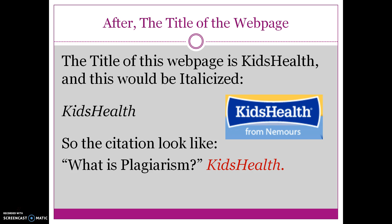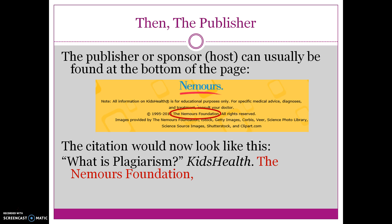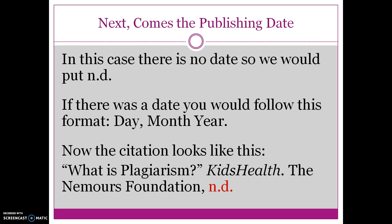Now the citation looks like this. Then comes the publisher. The publisher or sponsor can usually be found at the bottom of the page — here you can see in the picture that I circled it in red. Notice that there's a comma after the sponsor or publisher. Next comes the publishing date. In this case there is no date, so we would put 'nd' for no date. If there was a date, you would follow this format: first the day, comma, month, year, period.